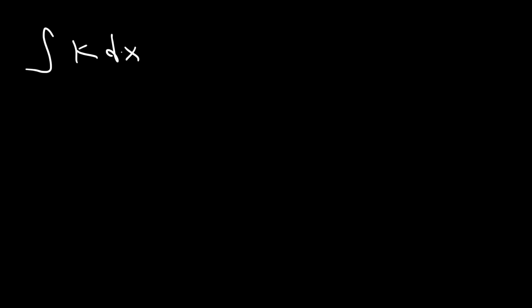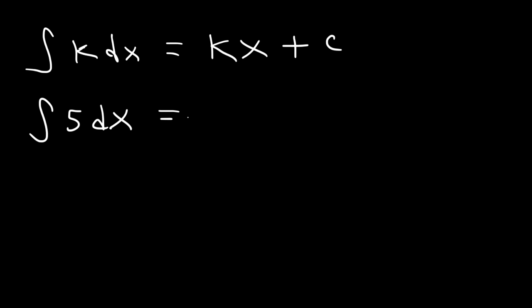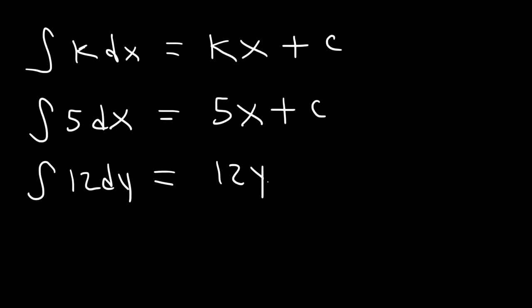Now what if we have a constant? If we wish to integrate a constant with a variable of x, this is going to equal kx plus c. So if I want to integrate 5 dx, this is going to be 5x plus c. If I wish to integrate 12 dy, that's going to be 12y plus c. Or 4 dt — this is going to be 4t plus c.